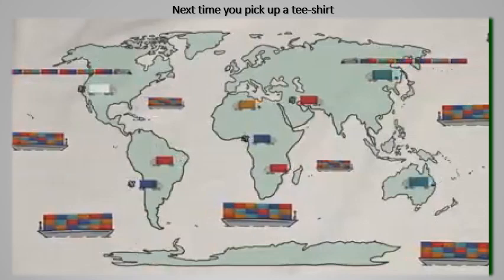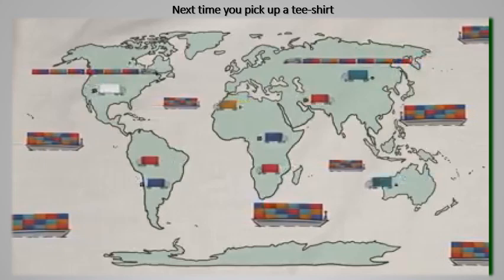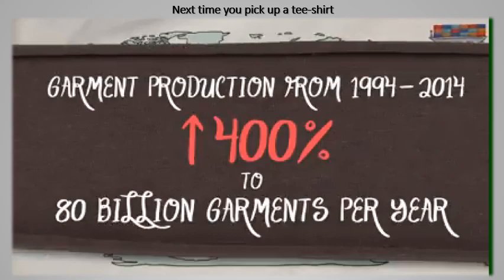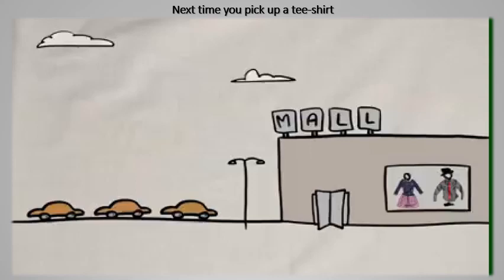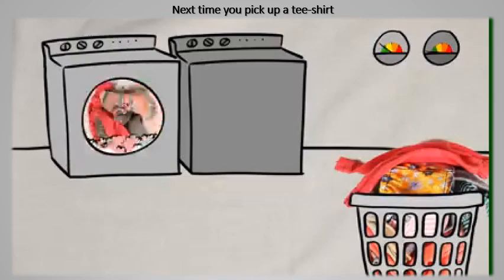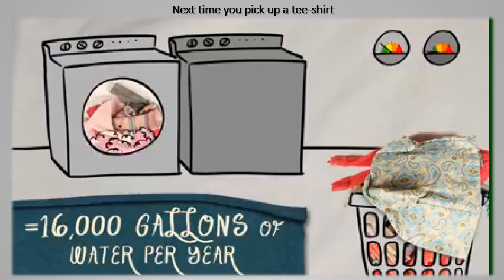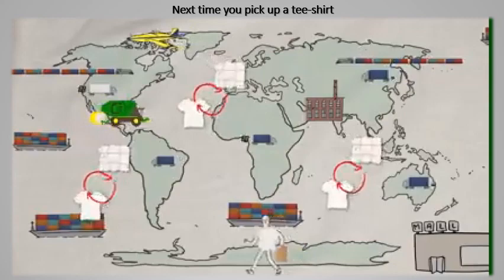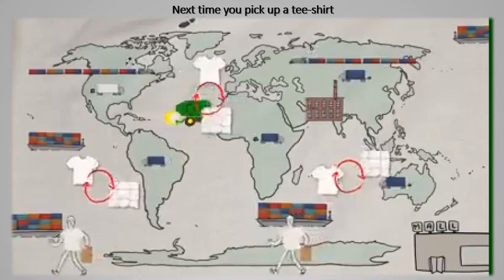Apparel production accounts for 10% of global carbon emissions, and it is escalating. Cheaper garments and public willingness to buy boosted global production from 1994 to 2014 by 400%, to around 80 billion garments each year. This dramatic shift driven by fast fashion has cost the environment, harmed the health of farmers, and driven questionable human labor practices, making fashion the second largest polluter in the world after oil.